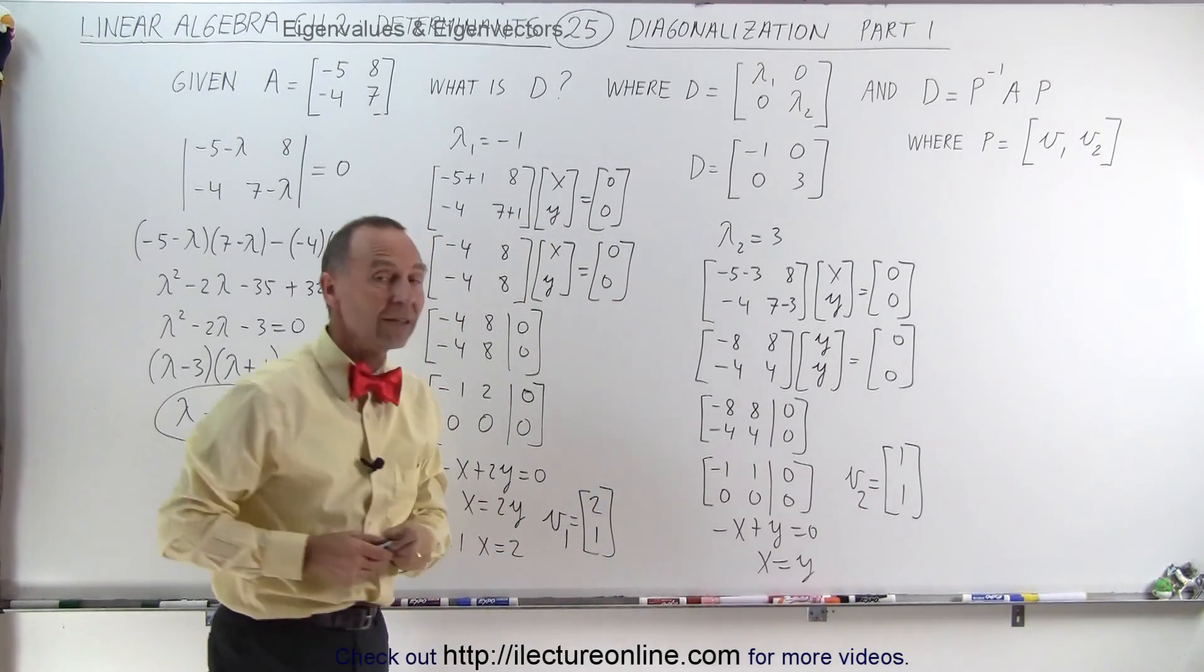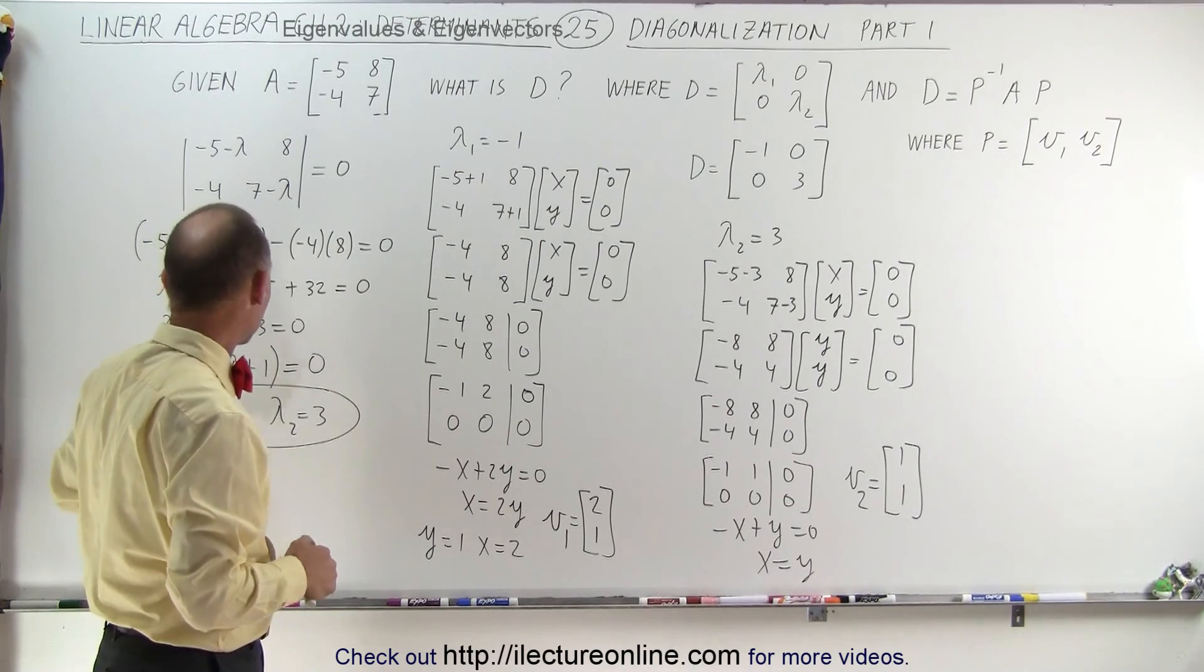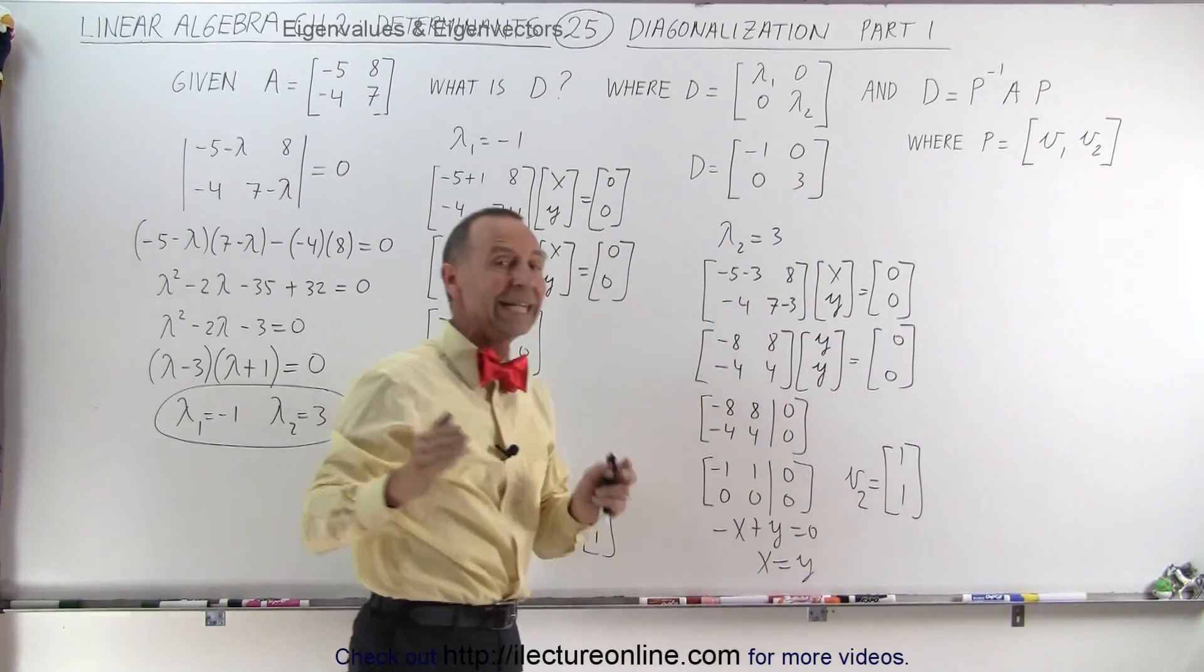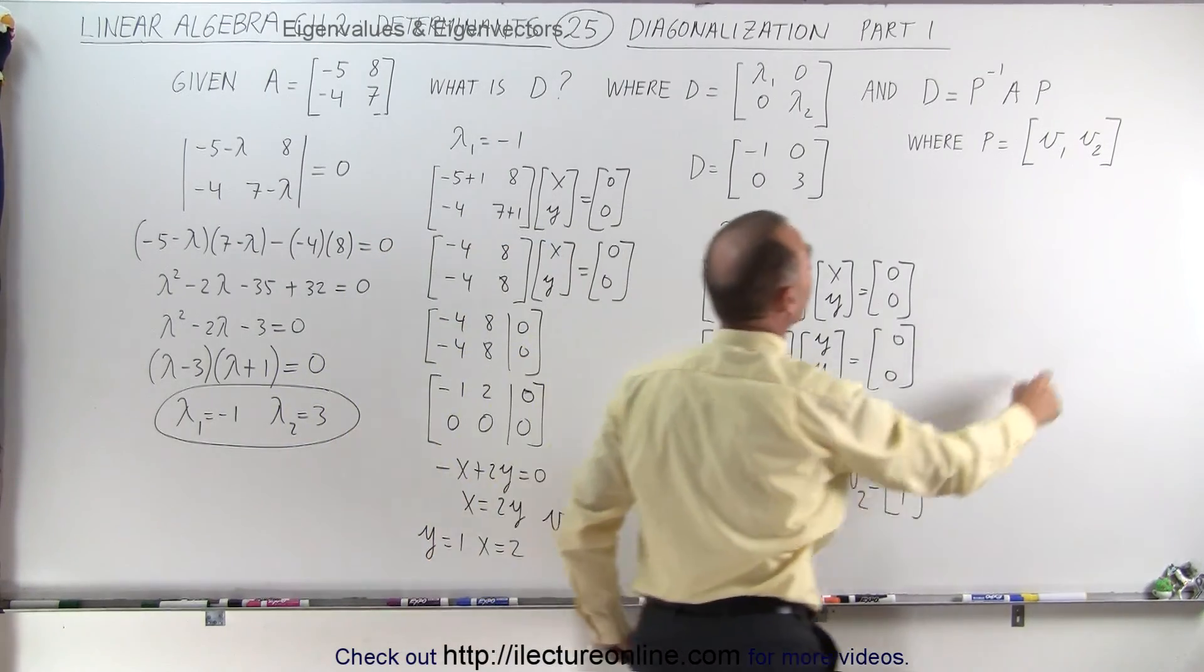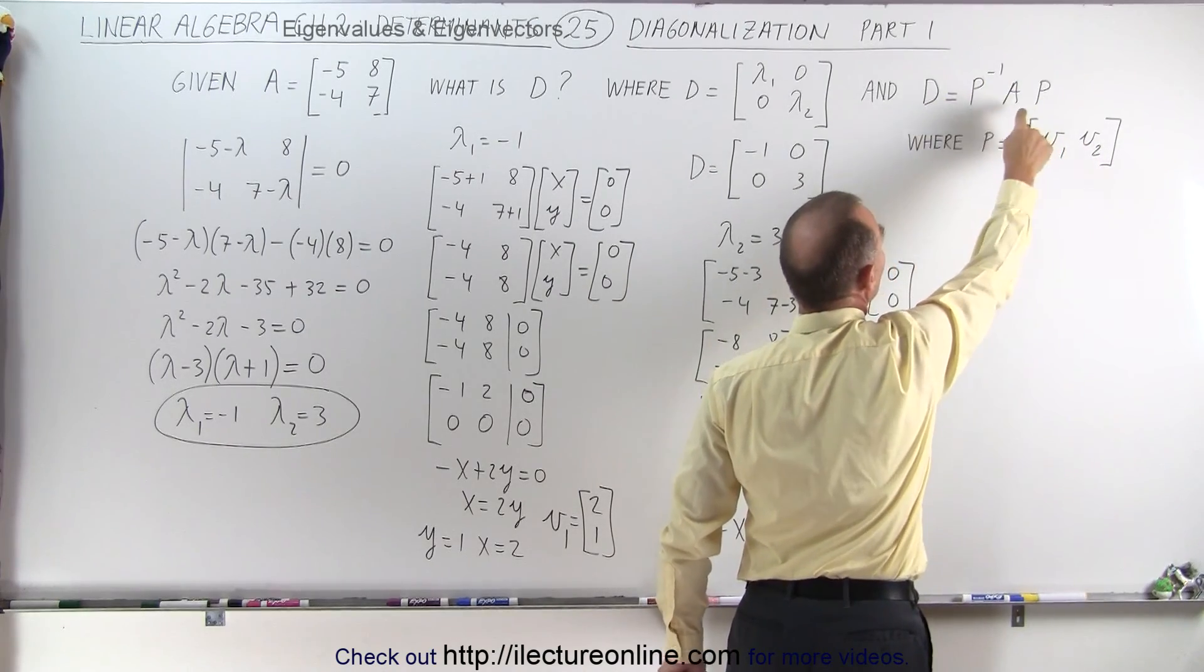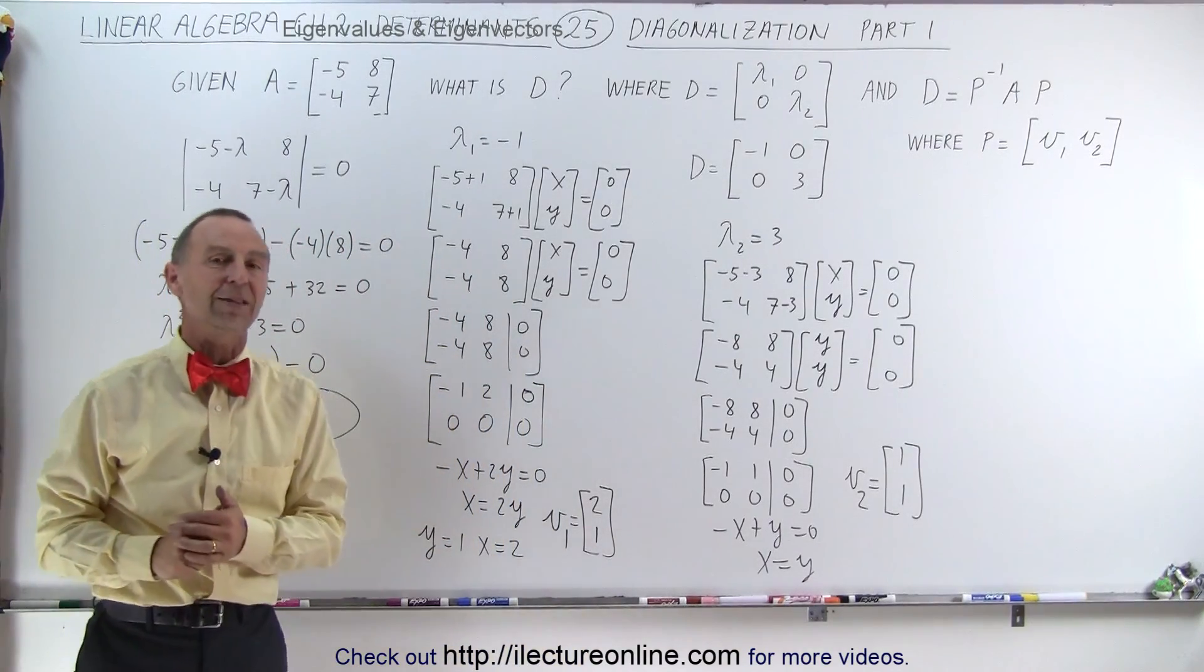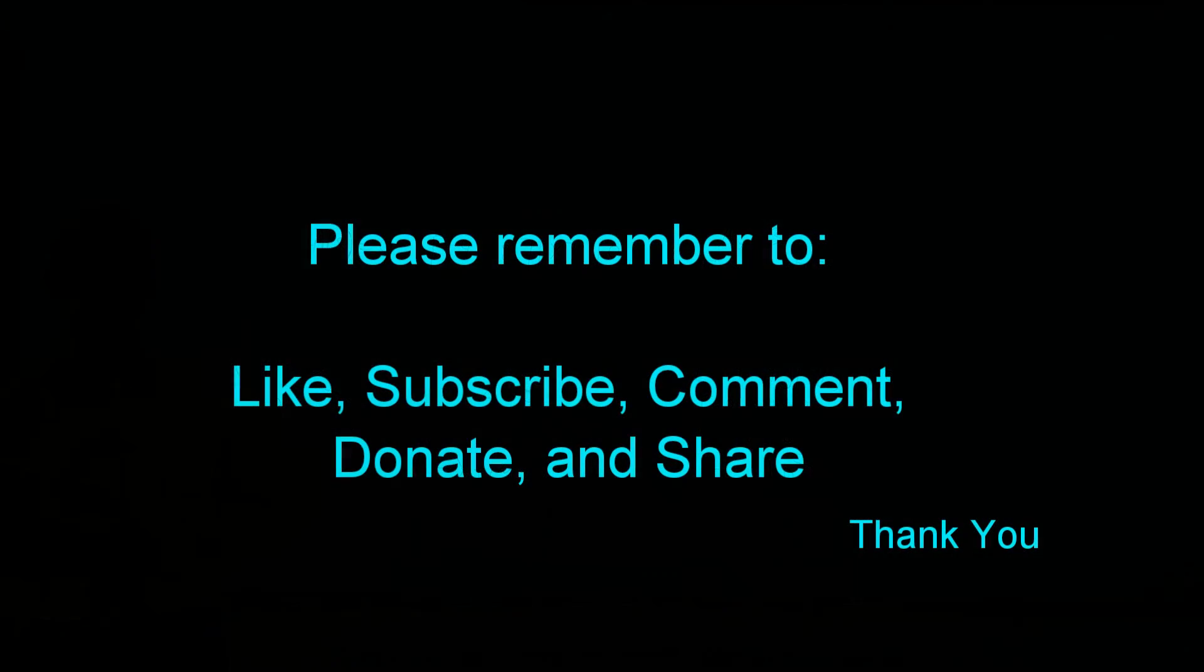So now we see that to find the diagonalized matrix, one way to do that is to go ahead and find the eigenvalues. Plug the eigenvalues in the diagonal here, zeros everywhere else. That gives us the diagonalized matrix. And for the next part, on the next video, we already found the two eigenvectors, which we'll be able to plug into this matrix right here. And that allows us to find the diagonalized matrix in this fashion as well. So stay tuned on part 2, and we'll show you how to do it in that next method. And that's how it's done.